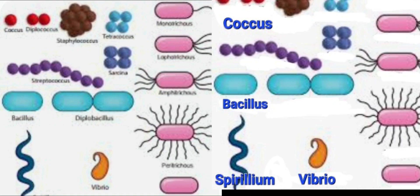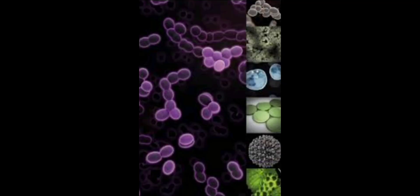The cocci type can stay singly, called monococcus, or occur in pairs called diplococcus. When in long chains, they are called streptococcus, while found in clusters, they are called staphylococcus. With the bacilli form or the rod-shaped bacteria, they may or may not possess flagella. Depending upon the number and the location of flagella, there are different namings for the bacteria.